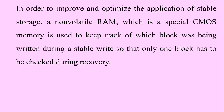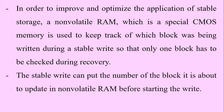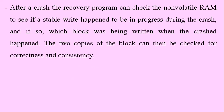To improve and optimize stable storage, a non-volatile RAM — a special CMOS memory — is used to keep track of which block was being written during a stable write, so that only one block has to be checked during recovery. The stable write can put the number of the block it is about to update in non-volatile RAM before starting the write. After a crash, the recovery program can check the non-volatile RAM to see if a stable write was in progress during the crash and, if so, which block was being written. The two copies of the block can then be checked for correctness and consistency.